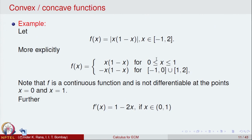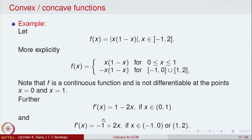Wherever the function is differentiable, we compute the derivative. In the open interval (0, 1), f(x) = x(1 − x) = x − x², so f′(x) = 1 − 2x. In the intervals (−1, 0) and (1, 2), f(x) = −x(1 − x), so f′(x) = −1 + 2x.